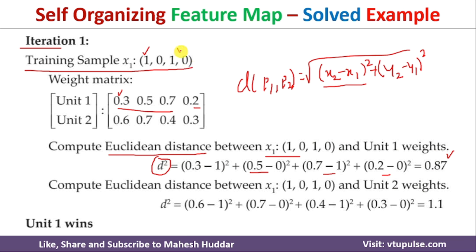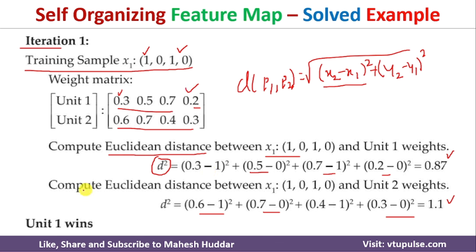Similarly, we calculate the distance from X1 to unit 2: (0.6−1)² + (0.5−0)² + (0.4−1)² + (0.3−0)² = 1.1, so d = √1.1. Comparing the two distances, the first distance (0.87) is smaller, meaning unit 1 wins this iteration.